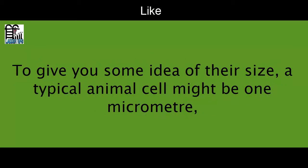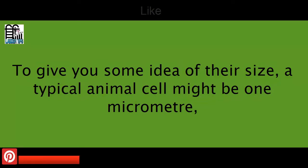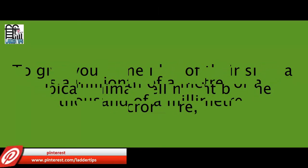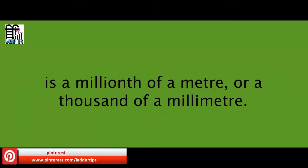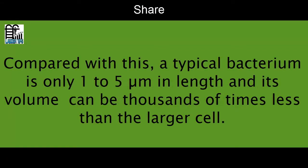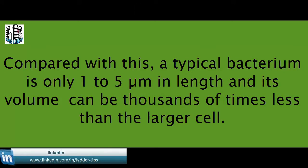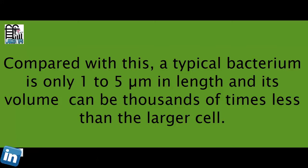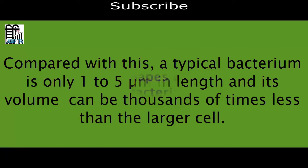To give you some idea of their size, a typical animal cell might be 1 micrometer — a micrometer is a millionth of a meter, or a thousandth of a millimeter. Compared with this, a typical bacterium is only 1 to 5 micrometers in length, and its volume can be thousands of times less than the larger cells.